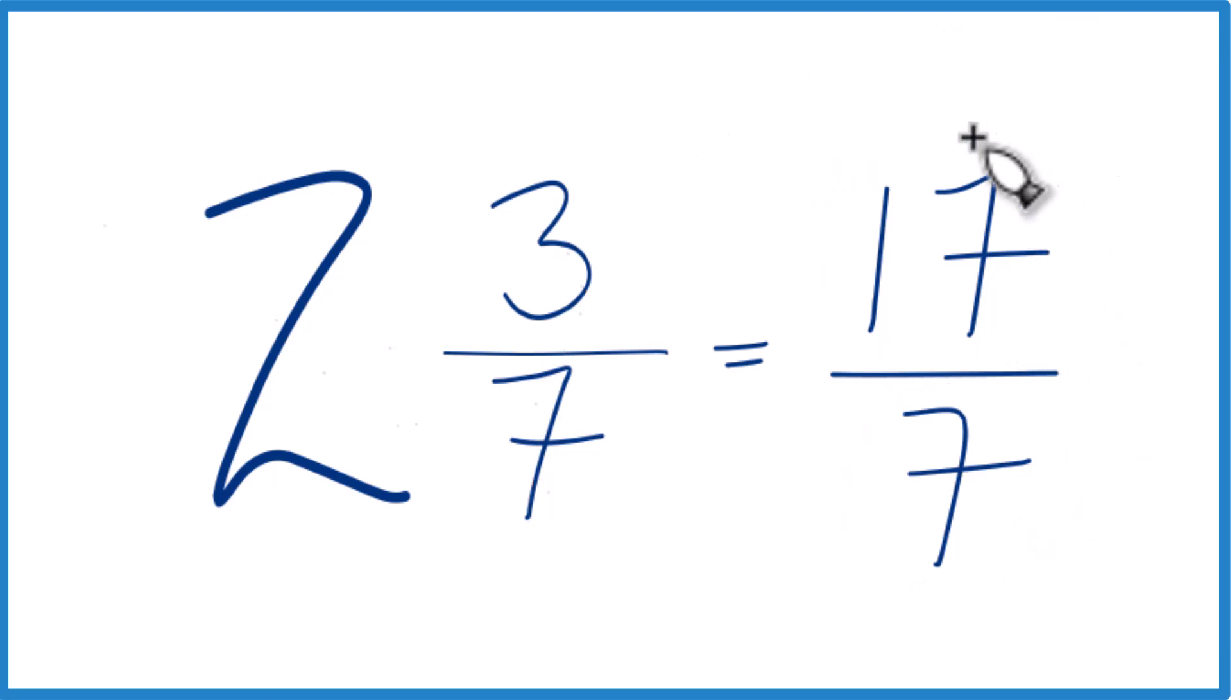It's an improper fraction because the numerator here, the 17, that's larger than the denominator. So we call it an improper fraction.